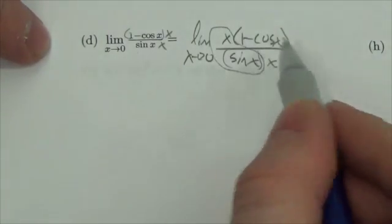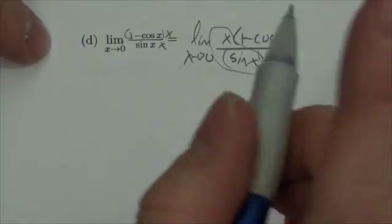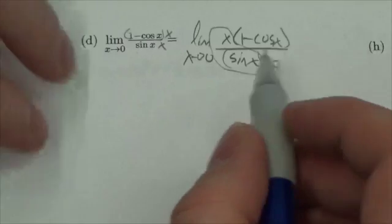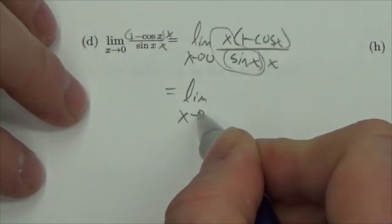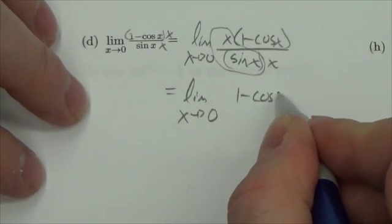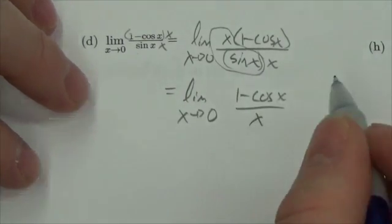This piece right here is going to become 1. I know it's the reciprocal of sin x over x, but it's still going to go to 1. So I'm left with the limit as x approaches 0 of (1 - cos x) / x.